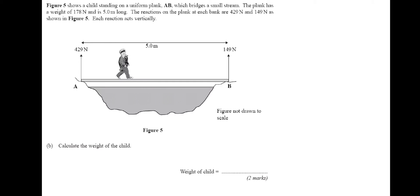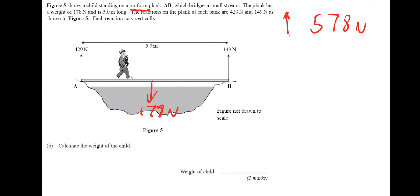So to calculate the weight of the child: the total force going up is 429 plus 149, which gives a total vertical force acting upwards of 578 newtons. The total down must be the same because the system is in equilibrium. The weight of the bridge acts in the centre because it's a uniform plank — whenever you get a uniform object, the weight always acts from the centre. So 578 minus 178 gives the weight of the child as 400 newtons.